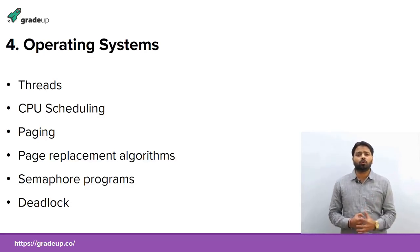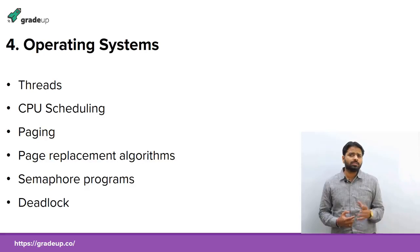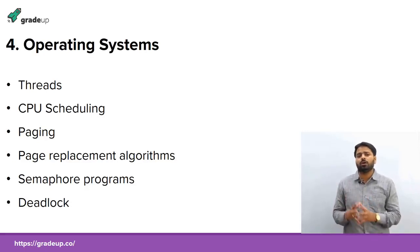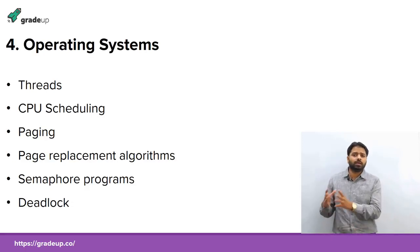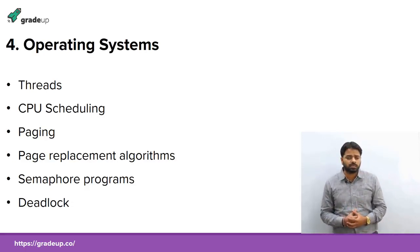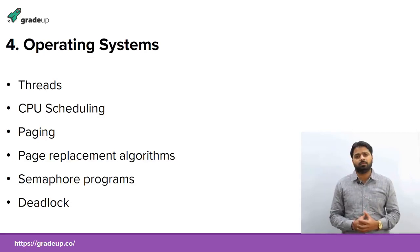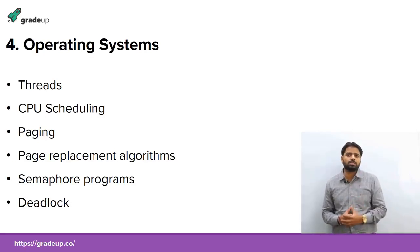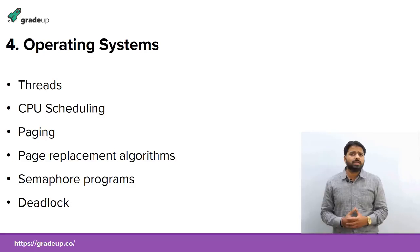Finally, the deadlock topic. There have been many easy questions asked on deadlock so far. They give you a few processes and few available resources, and you have to find where deadlock will not occur — such as how many resources can be maximally provided or how many maximum processes can be allotted. Practice these kinds of questions from the deadlock topic.